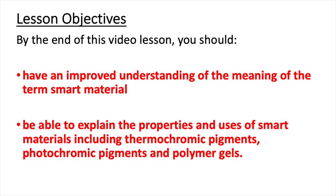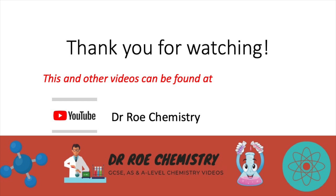That concludes this video lesson. After watching this video, you should have an improved understanding of the meaning of the term smart material, and you should also be able to explain the properties and uses of smart materials, including thermochromic pigments, photochromic pigments, and polymer gels. Thank you for watching. This and other GCSE, AS, and A-level chemistry videos can be found on our YouTube channel, Dr O Chemistry.